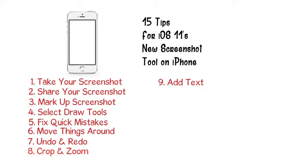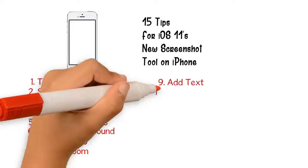Adding text is pretty much exactly the same as how it was in the markup tool in photos in iOS 10. Just tap on the A icon, tap on the text box, then edit and start typing. You can choose different colors, different fonts, make it smaller or bigger, and change the text's justification or make it monospaced.